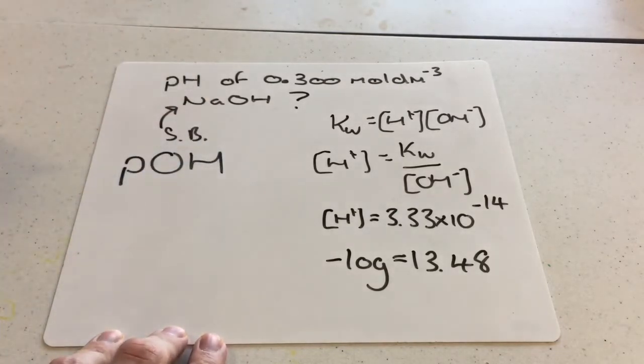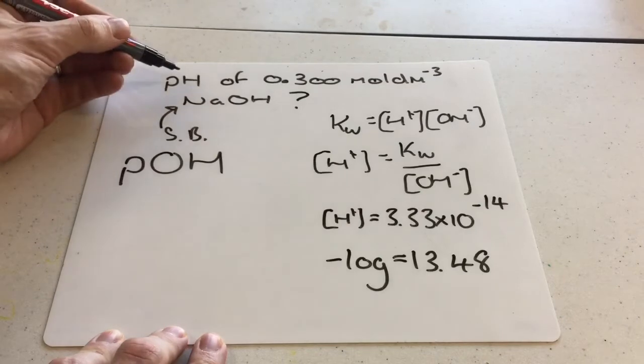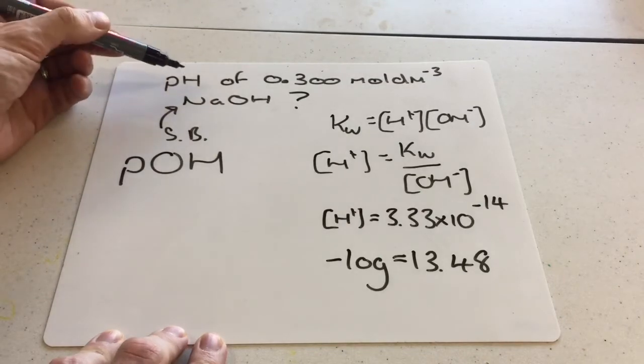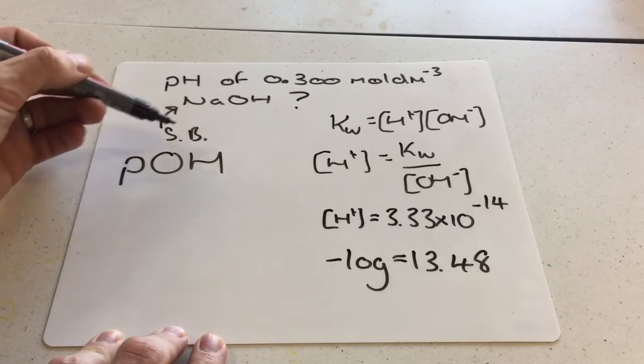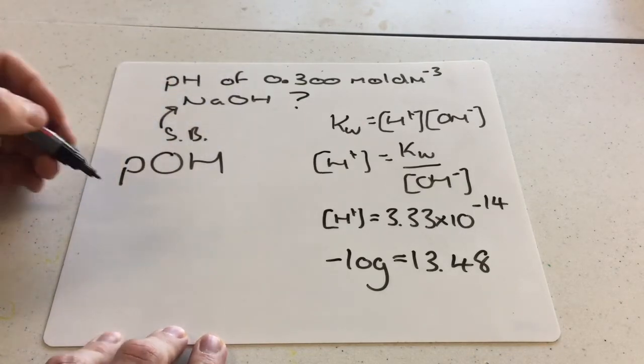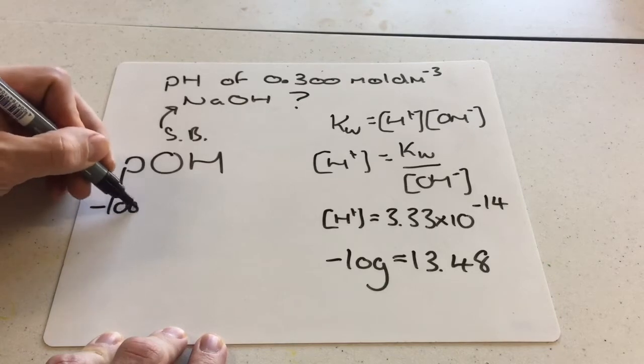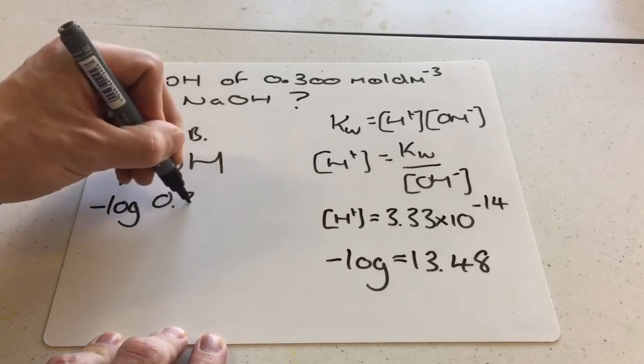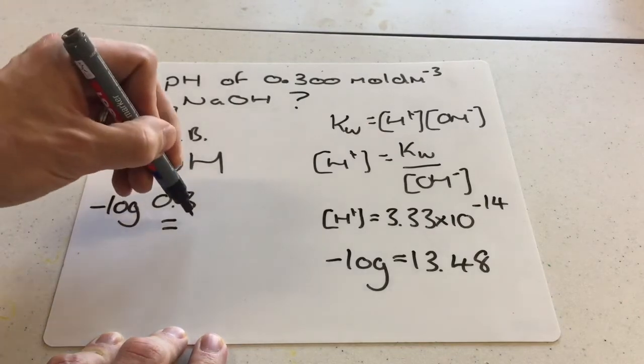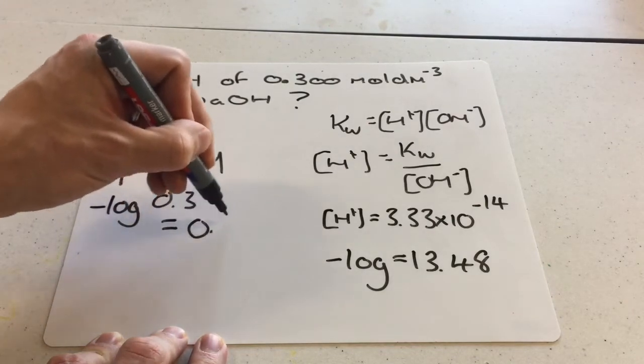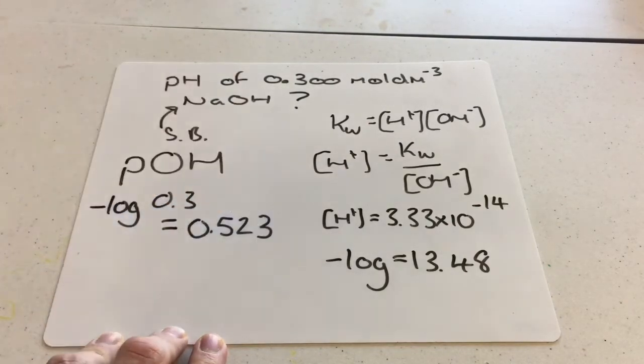POH. It's very similar to pH, in that pH meant minus log of the H plus ion concentration. POH means minus log of the OH minus ion concentration. So you do minus log of 0.3, and it gives you a value of, and you get to this point, you think, well, that's not the right answer, because that's 0.523. So that's not the same number as this down here.